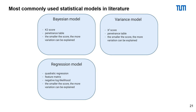On this slide, we listed the most commonly used statistical models in literature. The Bayesian model uses a penetrance table and the K2-score. The variance model also uses a penetrance table and the chi-square score. The regression model uses a quadratic regression, a feature matrix, and a negative log likelihood. For all of these models, the smaller the score, the more variation can be explained.